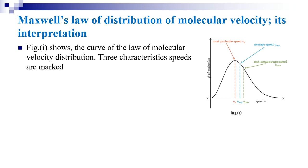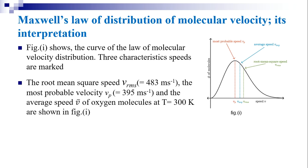The most probable velocity means that the largest number of molecules will have that velocity. The average speed is obtained by taking the average of the speeds of all molecules. The root mean square speed gives v_rms. These three speeds are shown in the graph. For oxygen molecules at 300 K: v_rms = 483 m/s, along with the most probable velocity vp and the average speed.